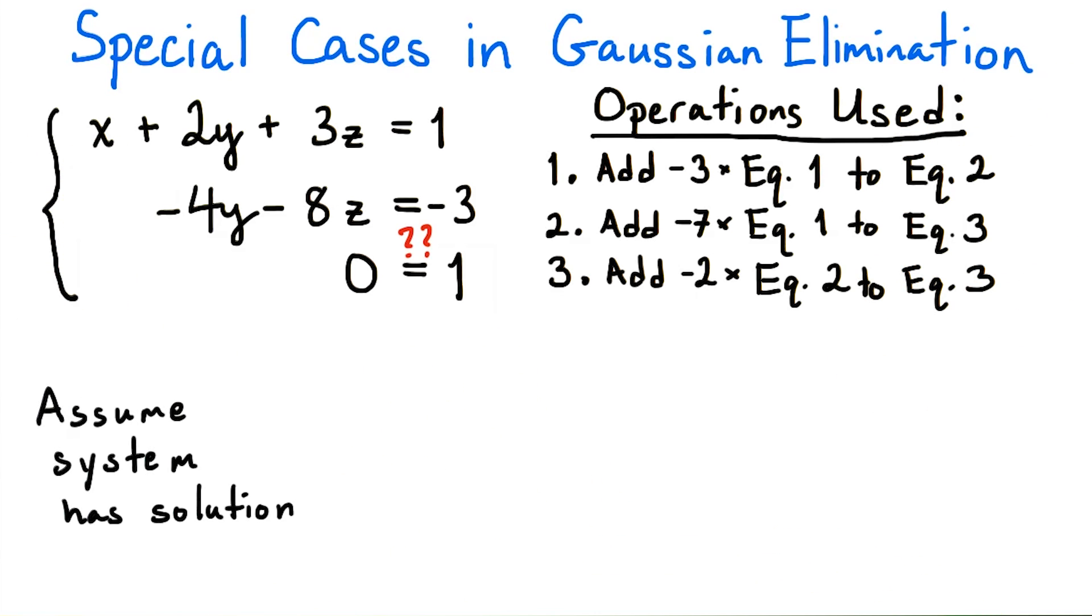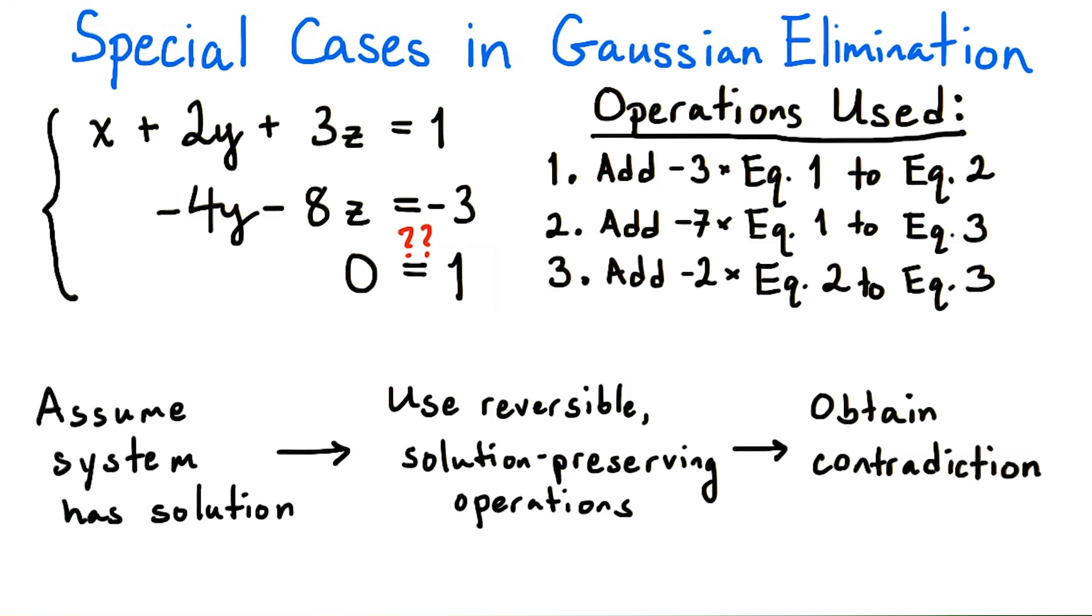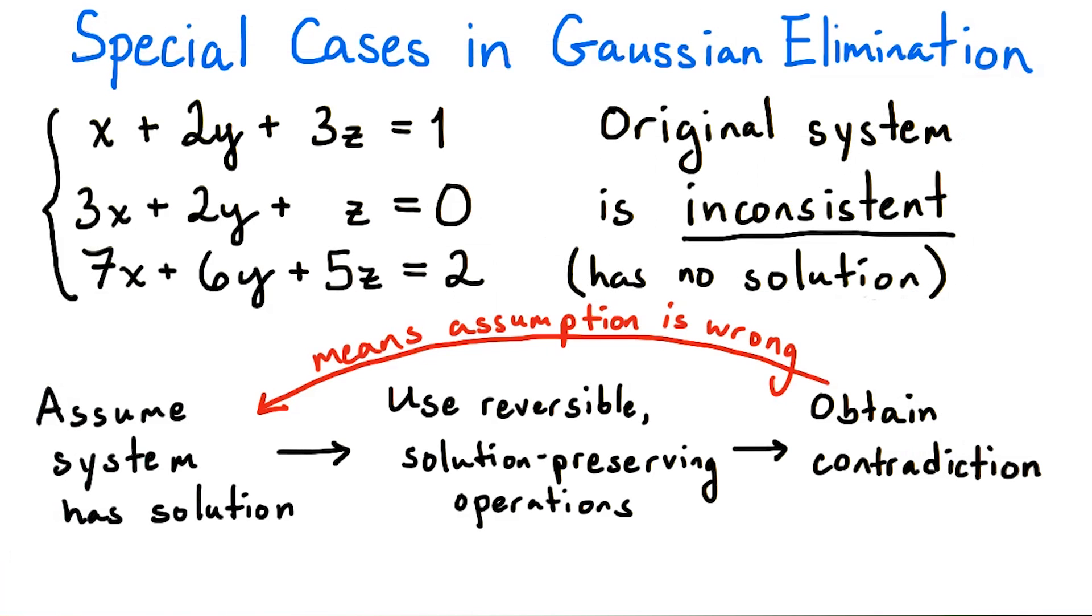What does this mean? Well, the original system of equations assumes that there are numbers x, y, and z which satisfy the three simultaneously. Since we used legal operations on the original system and obtained a false statement, it means that these supposed numbers x, y, and z which satisfy the system must not exist. In other words, this contradiction tells us that the system is inconsistent. It has no solutions.